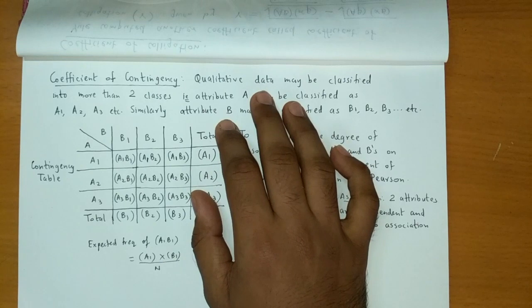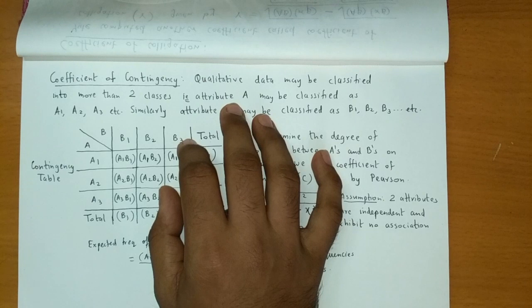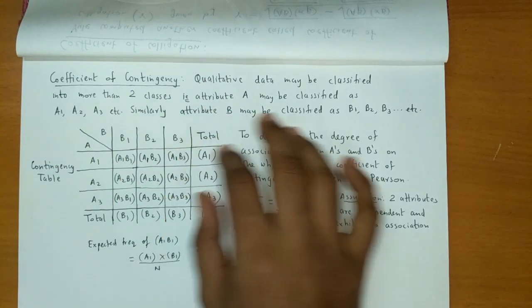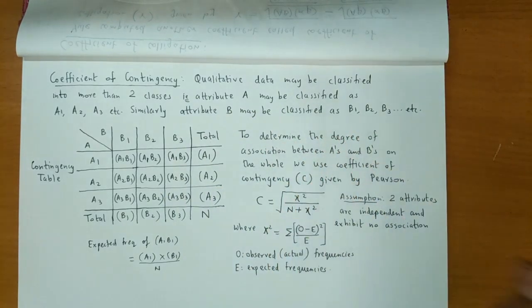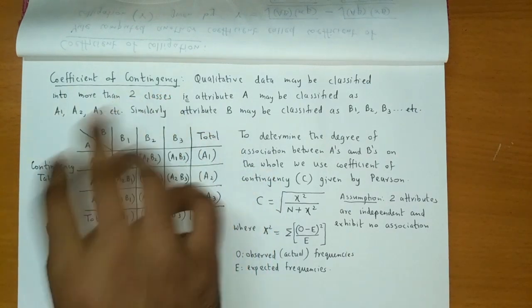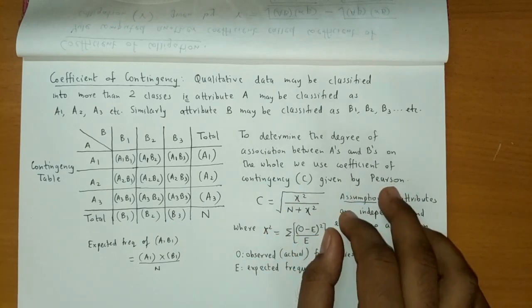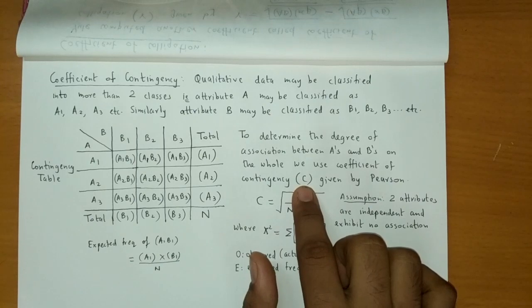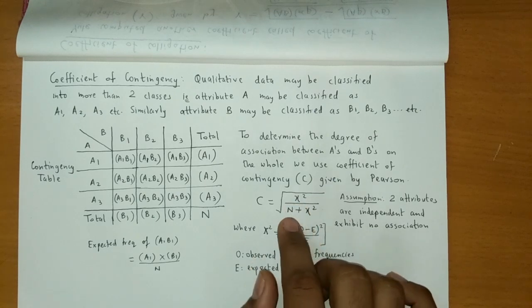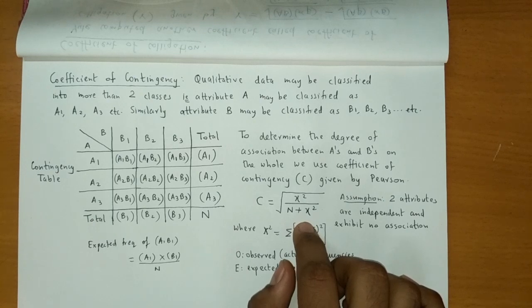When qualitative data is classified into more than two classes — for example, attribute A classified as A1, A2, A3, and attribute B classified as B1, B2, B3 — we use the Coefficient of Contingency. It was invented by Pearson and is denoted by C. The formula is: C equals the square root of chi-square upon n plus chi-square.